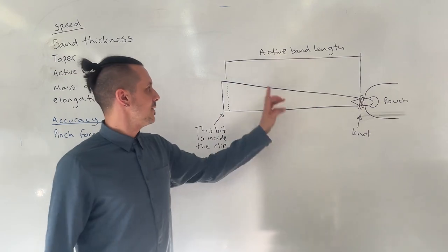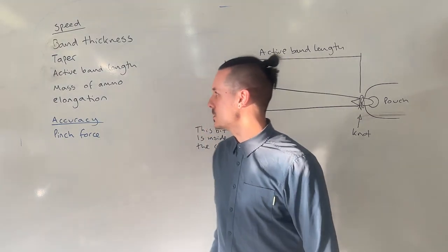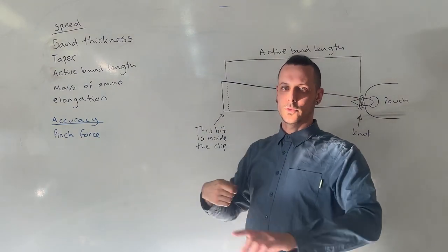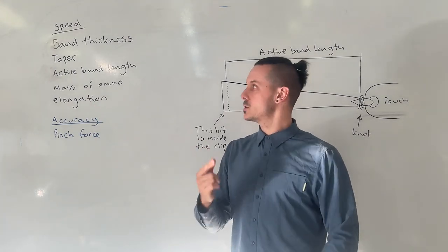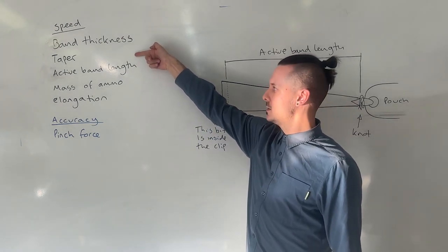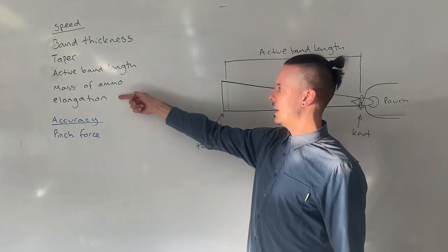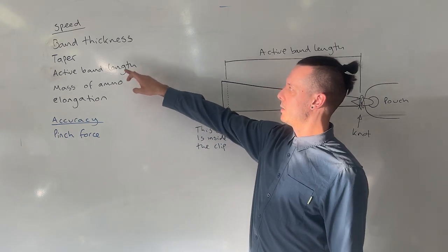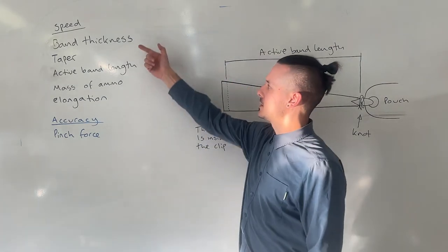The active band length is what goes up to the knot to attach the band to the pouch. So the active band length is relevant because the length of your draw and the active band length determine the elongation. So fastest possible shooting you have thin bands, light ammo, tapered with a relatively short active band length to your draw length, and therefore you're increasing elongation. So lots of stretch, small ammo with tapered bands that are very thin, that's how you get the maximum amount of speed.